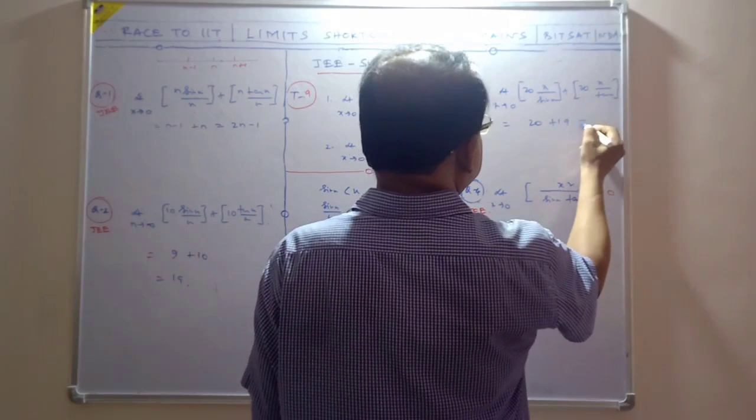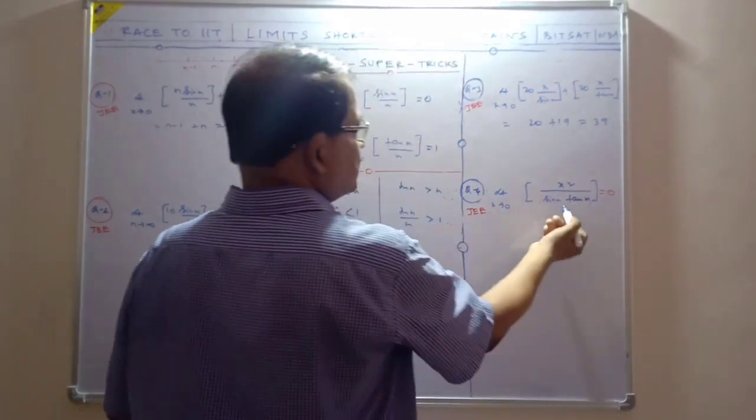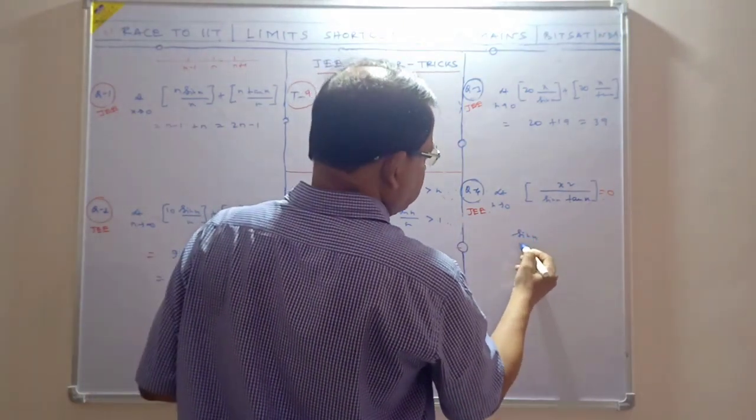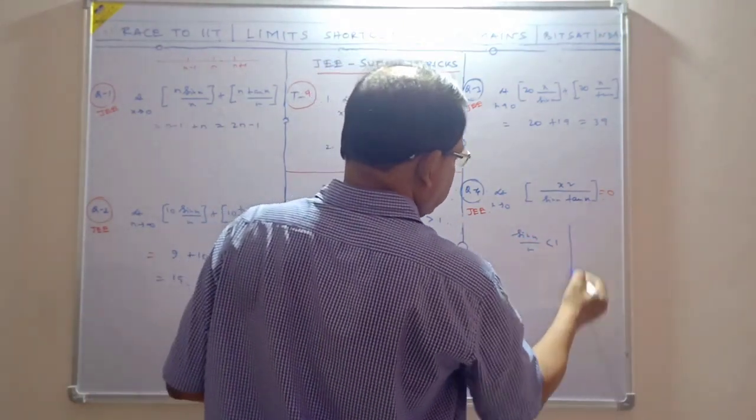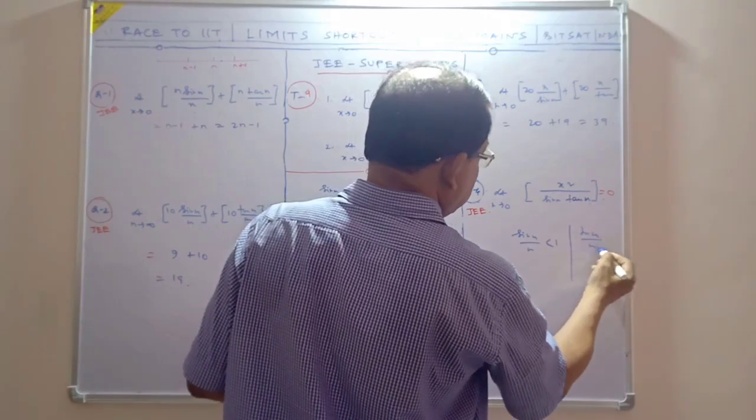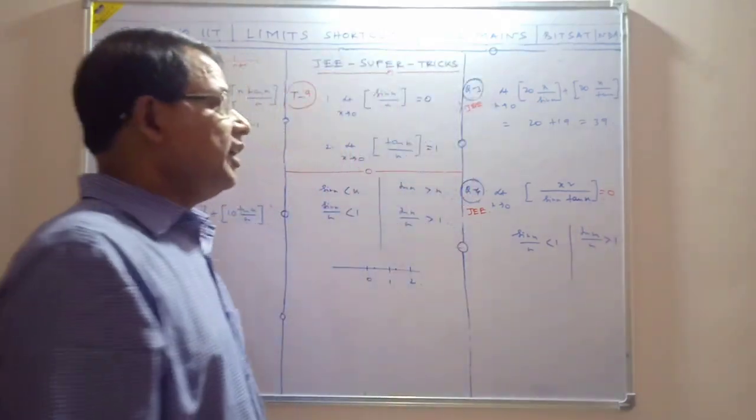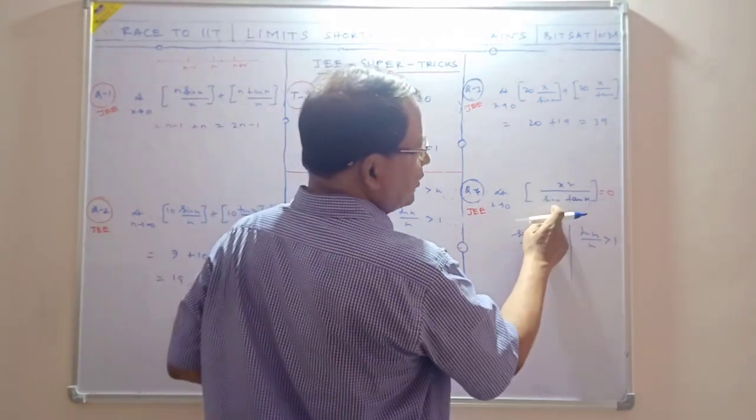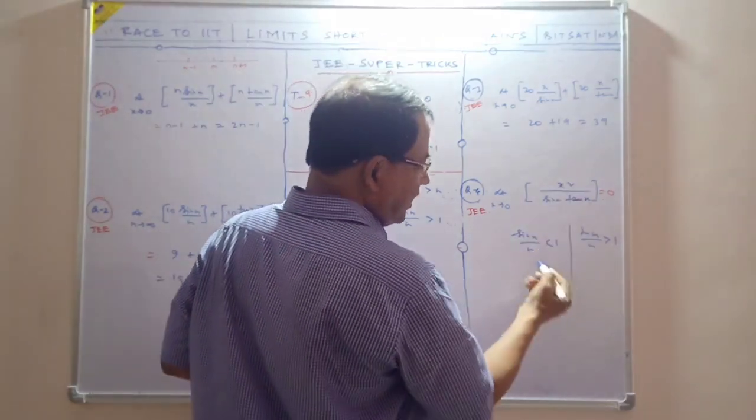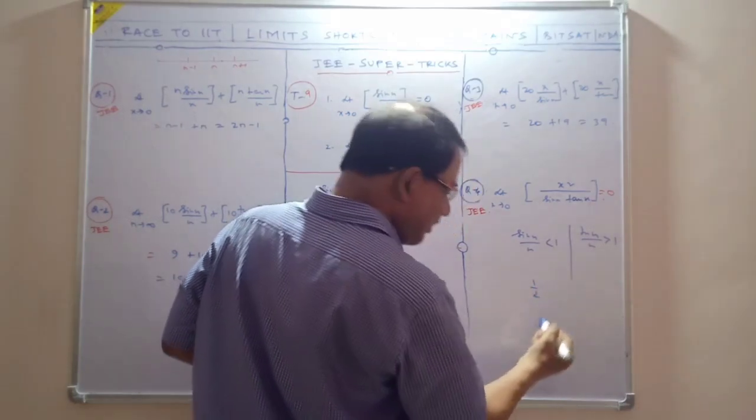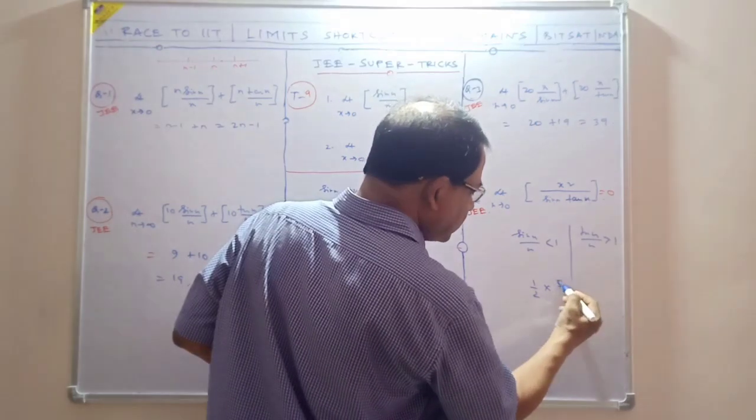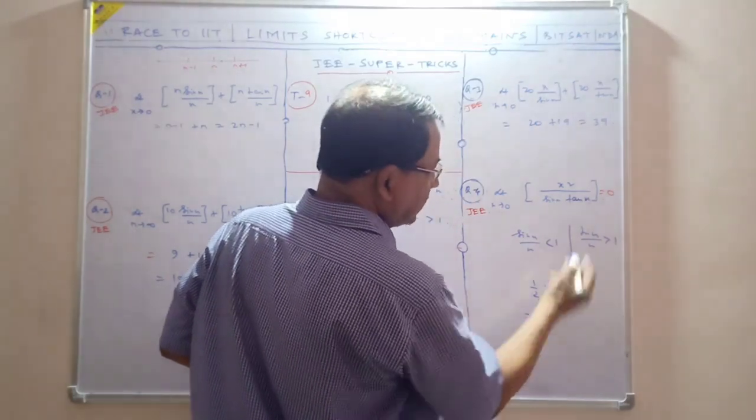This gives 29, so this is 39. For this one with sin x/x and tan x/x, tan x/x is greater than one. Since it's in the denominator, suppose sin x/x is 1/2 and this value is 5/4. Multiplying them, this value is just slightly more than 1, so this is 5.